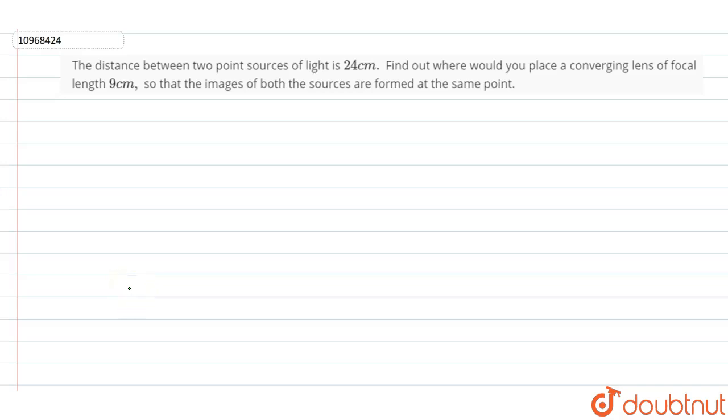So in this question we are asked that the distance between two point sources of light is 24 cm. Find out where you could place a converging lens of focal length 9 cm so that the images of both sources are formed at the same point.